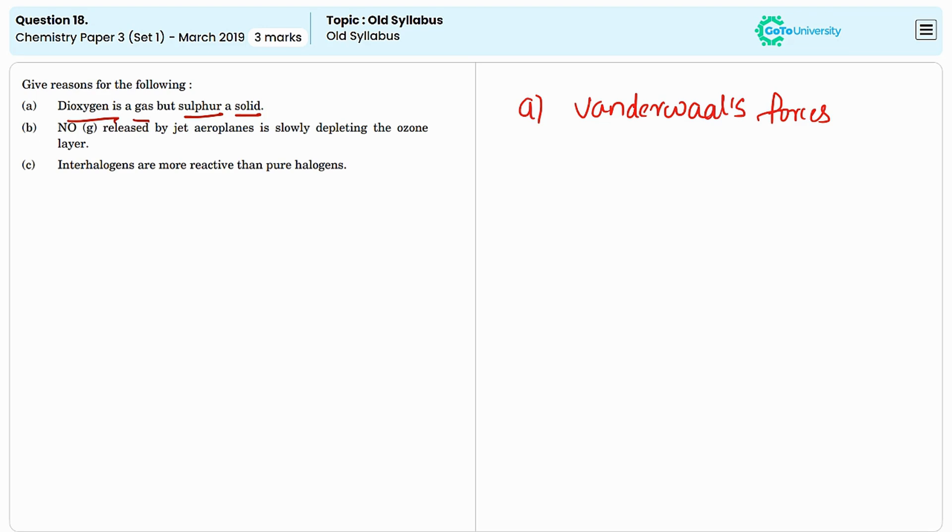While in case of sulphur, it is typically existing as a larger, more complex S8 molecules in its solid form. These molecules form a solid with stronger van der Waals forces and other intermolecular interactions. The higher molecular weight and the stronger intermolecular forces result in sulphur being a solid at room temperature.